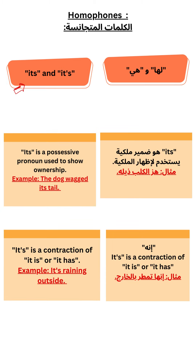Its and it's. 'Its' is a possessive pronoun used to show ownership. Example: The dog wagged its tail. 'It's' is a contraction of 'it is' or 'it has'. Example: It's raining outside.